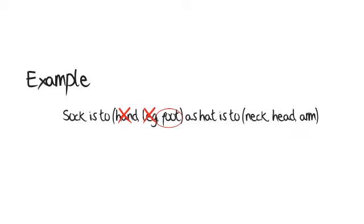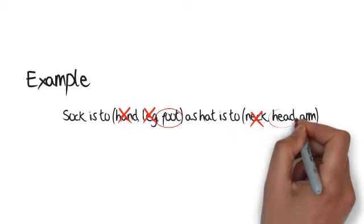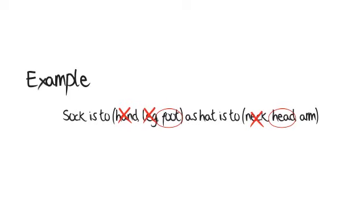The relationship between sock and foot is easy to see — a sock is worn on your foot. Now you know what the relationship is. Find a word from the second group: neck, head, arm — with the same relationship to the second word hat. Hat and neck — no. Hat and head — yes. Hat and arm — no. A hat is worn on your head.